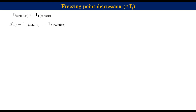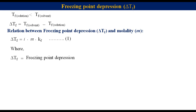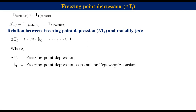Freezing point depression is related to the molality of the solution as: delta Tf equals i times m times Kf, where delta Tf is the freezing point depression, and Kf is the freezing point depression constant, also called the cryoscopic constant or molal depression constant, with units of Kelvin·kg·mol⁻¹ or degree centigrade·kg·mol⁻¹.